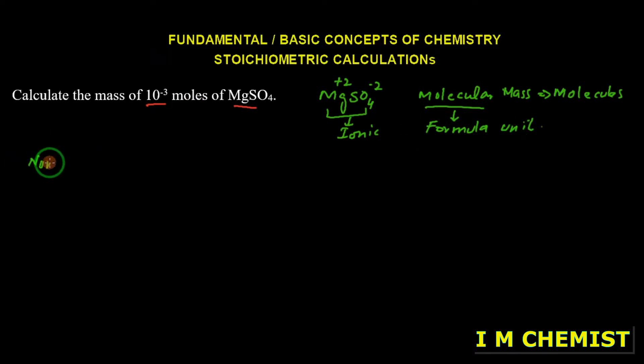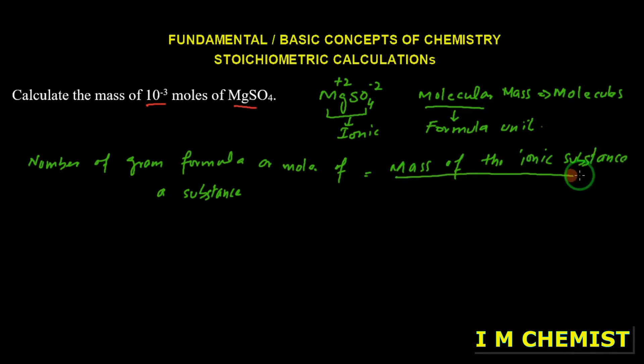We have a formula that number of gram formula or mole of a substance is equal to mass of the ionic substance divided by formula mass of the ionic substance.